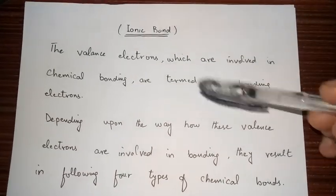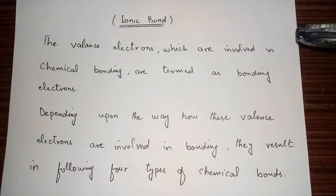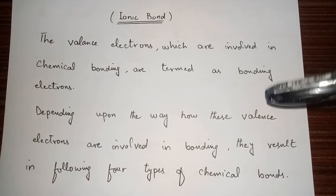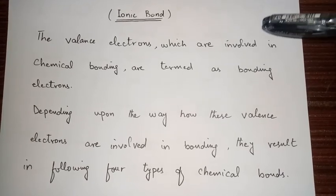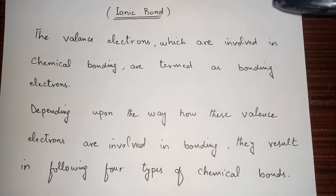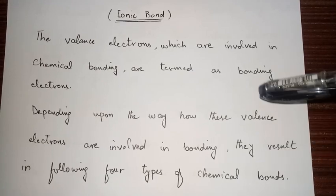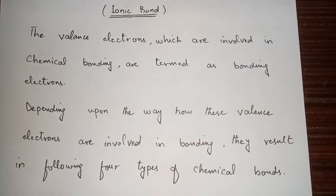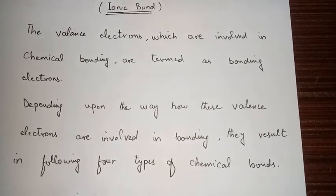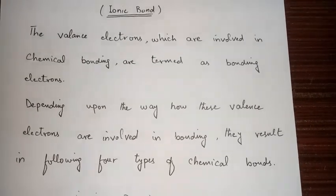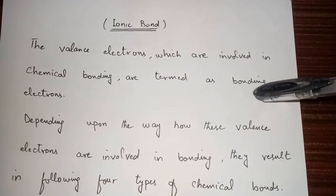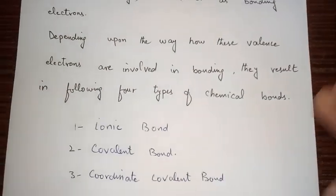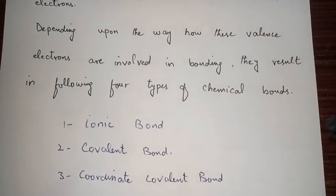The valence electrons which are involved in chemical bonding are termed as bonding electrons. The electrons which exist in the last shell of an atom are known as valence electrons. These electrons are involved in chemical bonding — they are shared or transferred from one atom to another atom.